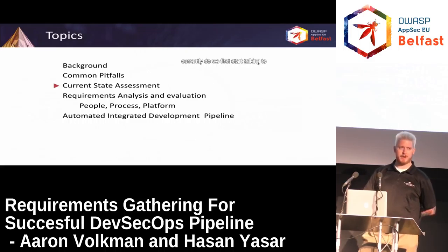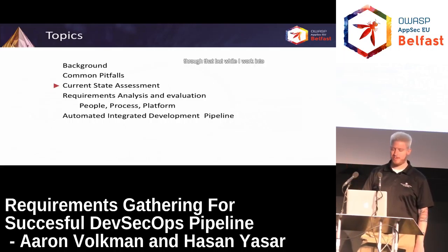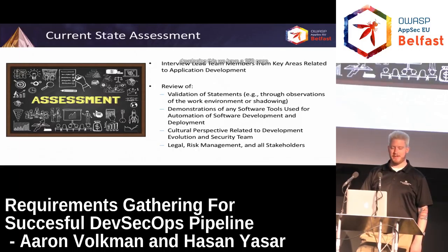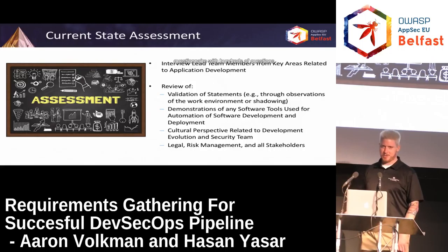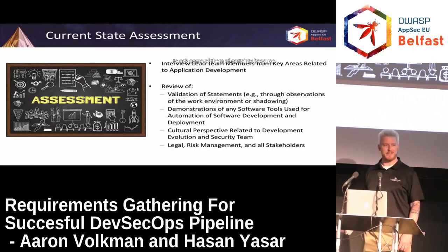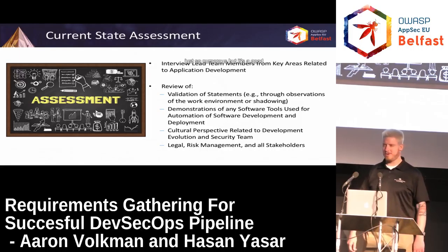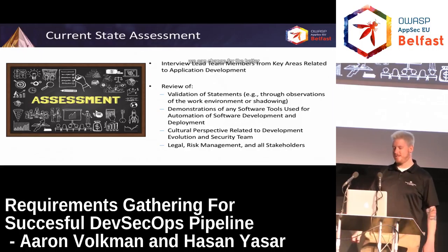Moving on to what we currently do: when we first start talking to an organization about doing DevOps, we begin by assessing their current state. We put a lot of work into developing this — we have a 250-page questionnaire with hundreds of questions. Whenever I go in, I'm very embarrassed to ask some of them of certain people because it's so numerous, but it's a good framework to get to know the organization and start talking about how we can change for the better.